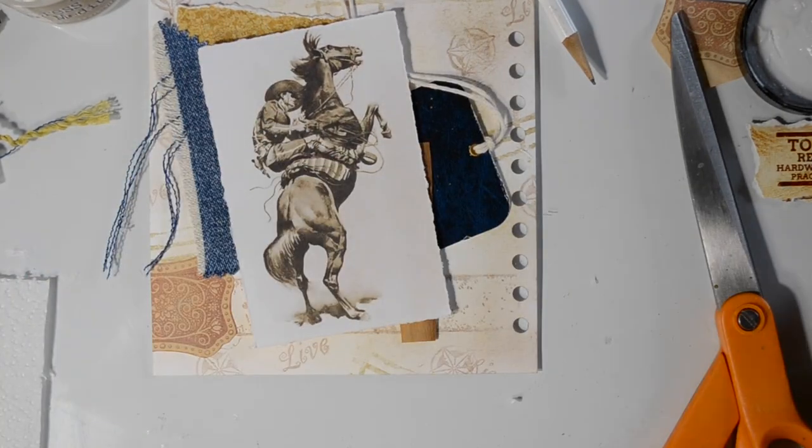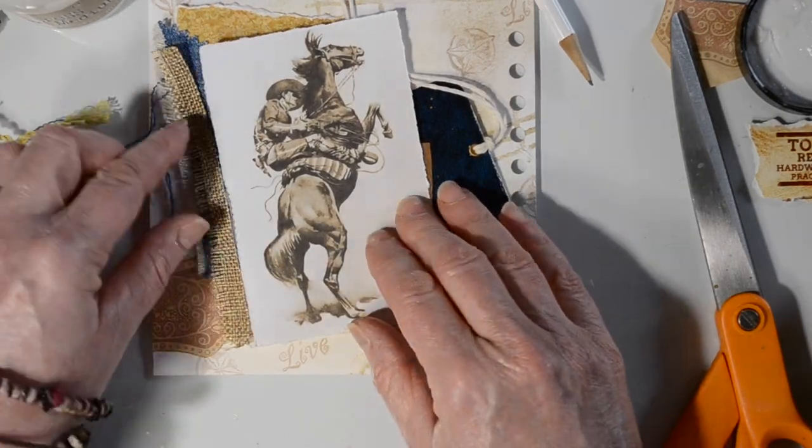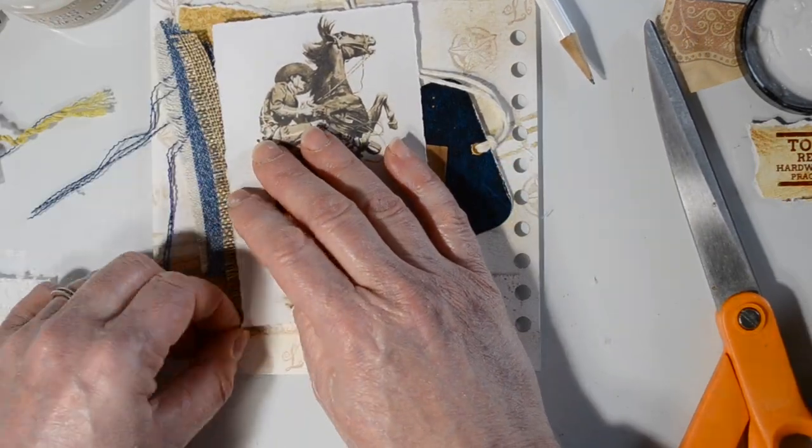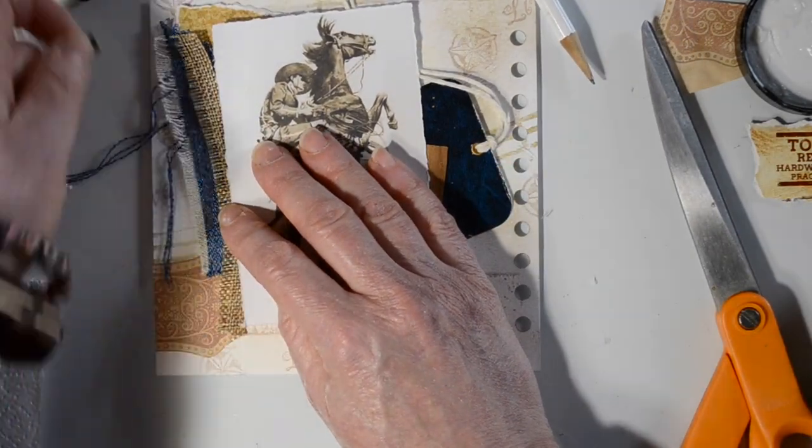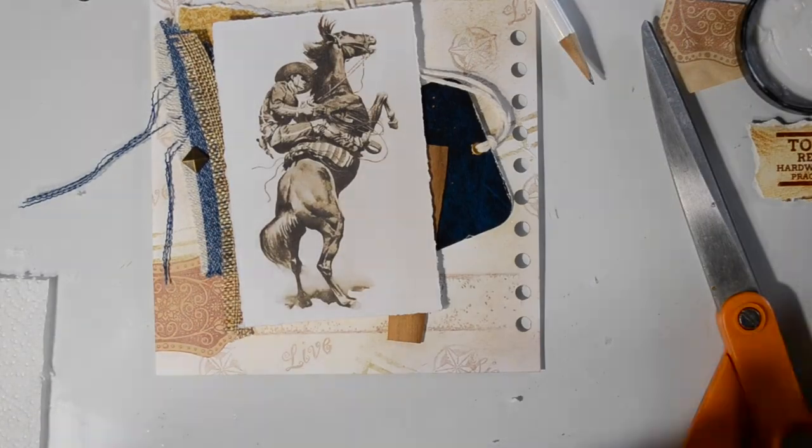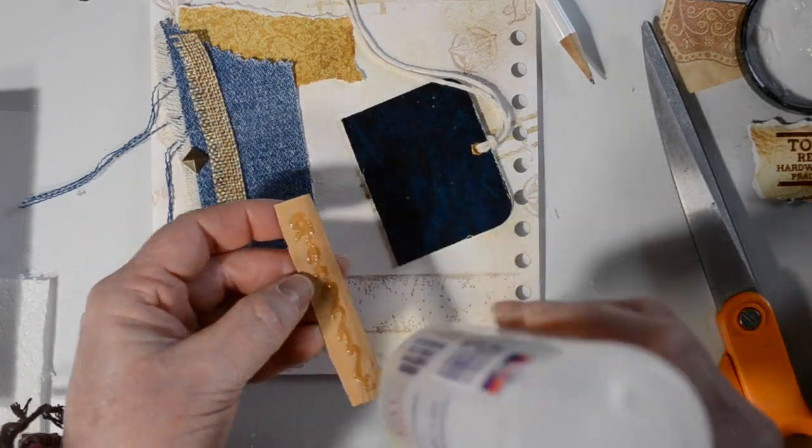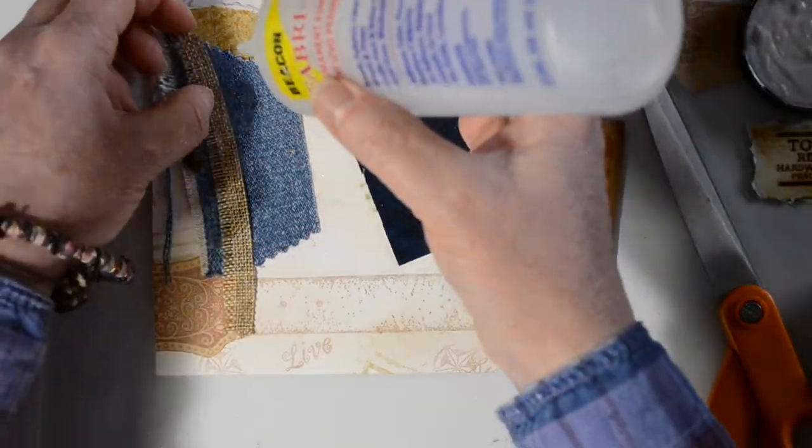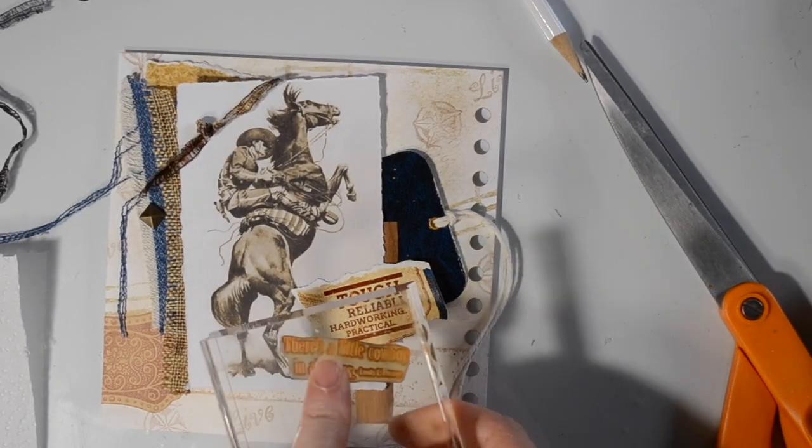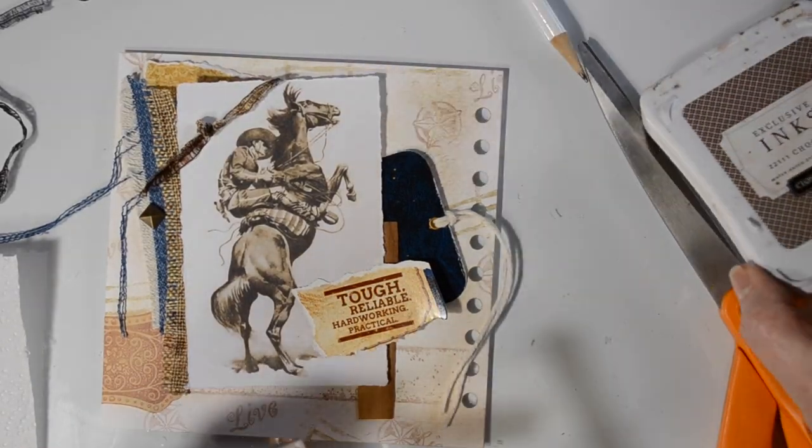Sometimes I'll have an idea for a scrapbook page but I won't want to commit to a full scrapbook page. So I'll go ahead and do it on the journal page first and then go back and recreate it larger with the materials that I really want to use for that. I'm going to go ahead and add fabric tack. This fabric tack holds a lot. It holds fabric, the wood. It holds a lot of things in place.